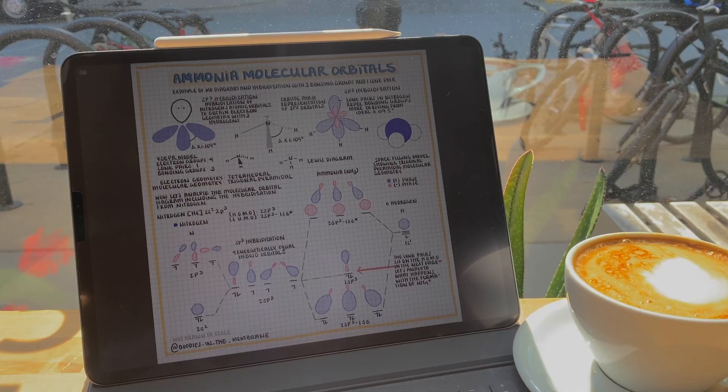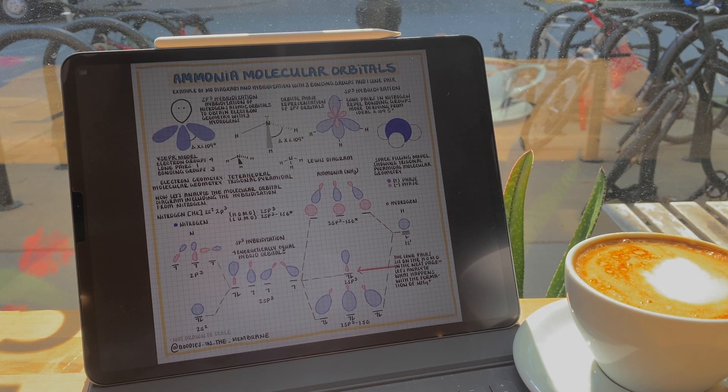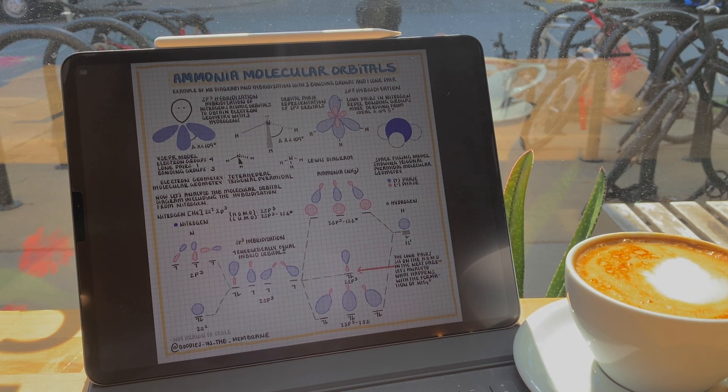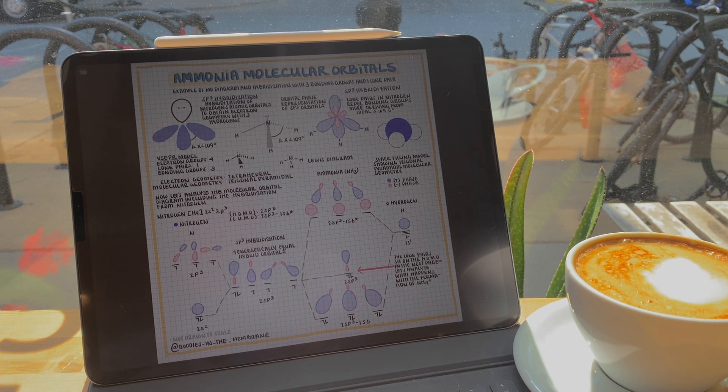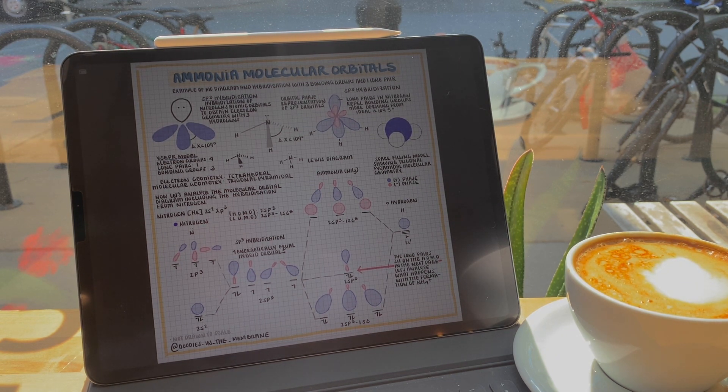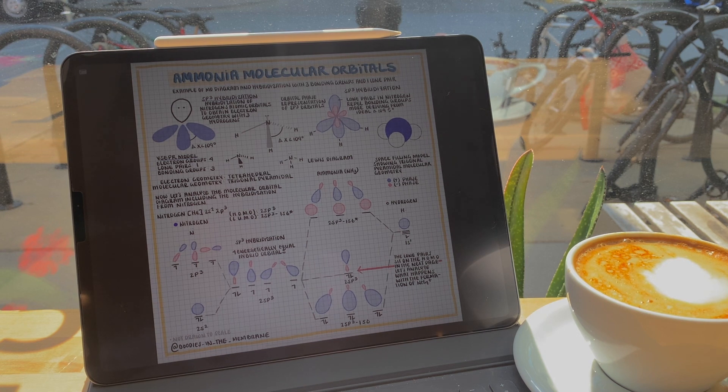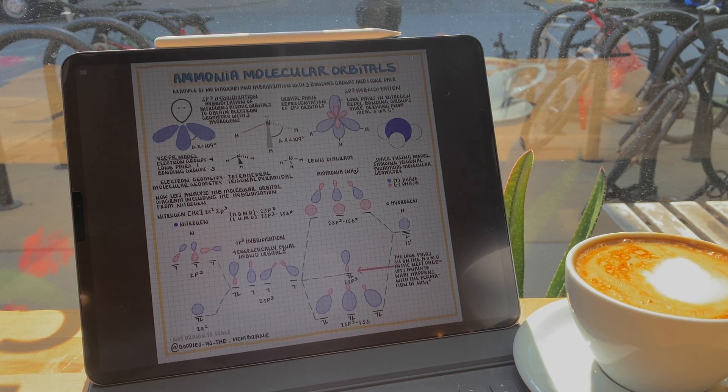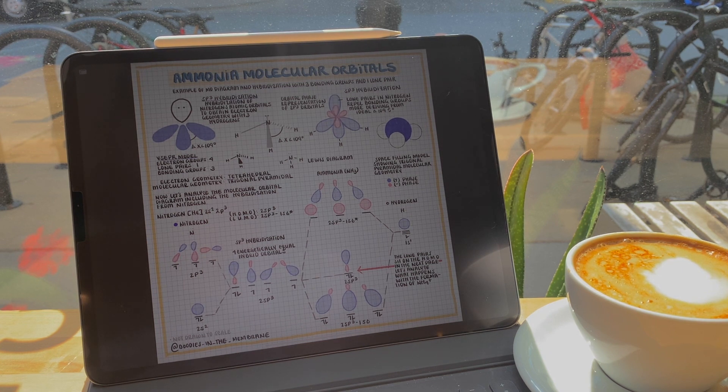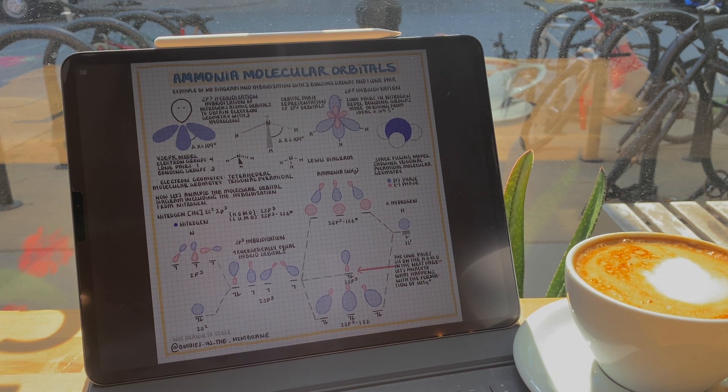For example, ammonia only has three bonding groups, but four electron groups, with the one remaining as a set of lone pairs. Its atomic orbitals will still hybridize in this case to form the four sp3 hybrid orbitals, forming its tetrahedral electron geometry. But once ammonia is formed and the bonds to hydrogen are created, the lone pair will repel the bonding groups, giving us that trigonal pyramidal molecular geometry that we're used to.